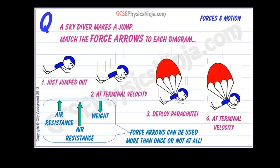The classic case of an object falling through a fluid is that of a skydiver falling through air. Let's go through each stage of a skydiver's jump and match the force arrows given here to each diagram. At first the skydiver has just jumped out — she's not moving very fast, in fact probably not moving at all — and she's accelerating downwards. The only force acting is the weight force of the skydiver.